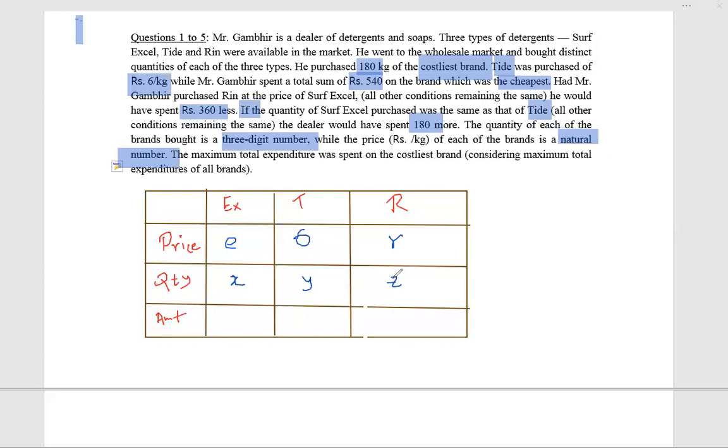Can this be 540? If I place 540 here, then I'm getting 90 here which is not permissible because the amount is a three-digit number. So 540 cannot come here, that is for sure. So any one of these two is 540. Surf Excel or Rin - one of them is the costliest brand, and it might be both. Can it be both? Maybe.